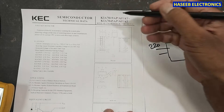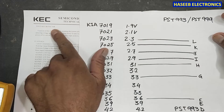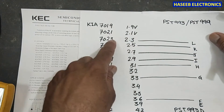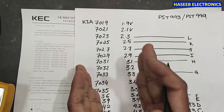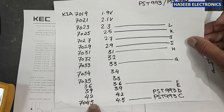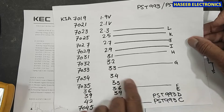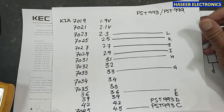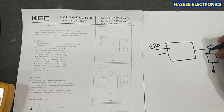The KIA 7019 is part of a complete family — KIA 70 voltage detectors. For example: 19 means 1.9 volt, 21 means 2.1 volt, 23 means 2.3 volt, 25 means 2.5 volt — the last two digits indicate the voltage. If we have 7045, that means 4.5 volt. The equivalent part number is PST 993: C = 4.5V, D = 4.5V, E = 3.9V, F = 3.6V, G = 3.3V, L = 2.3V. So if it is KIA 7019, when the supply voltage reaches 1.9 volt, it gives the activation pulse to the next circuit.